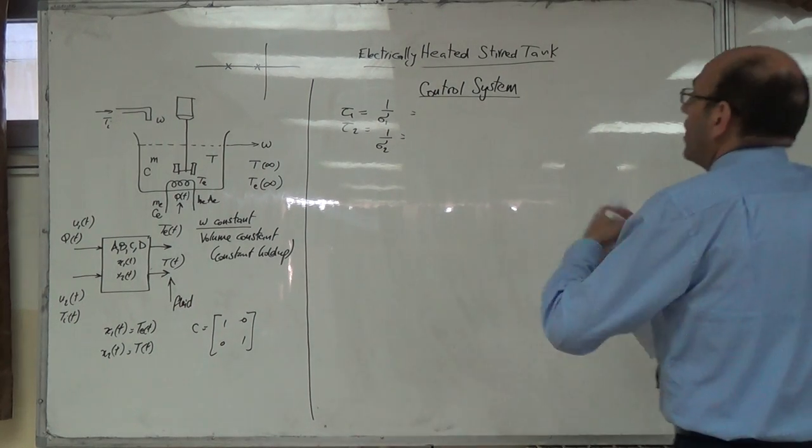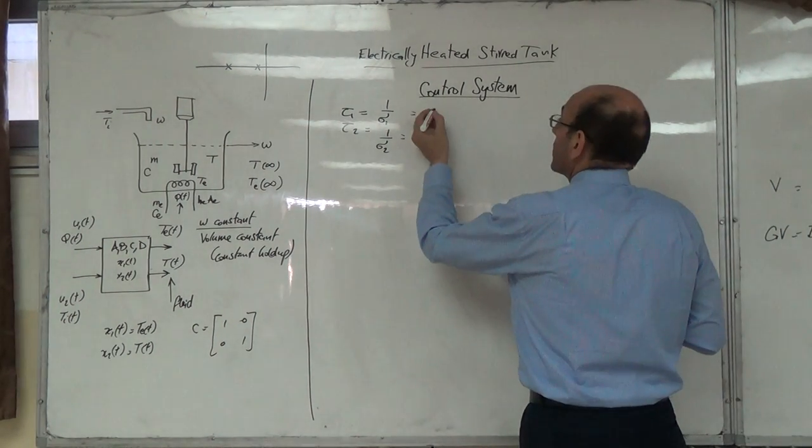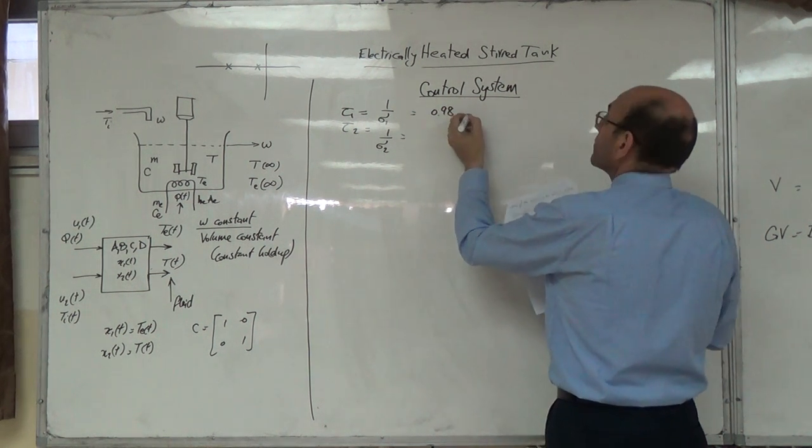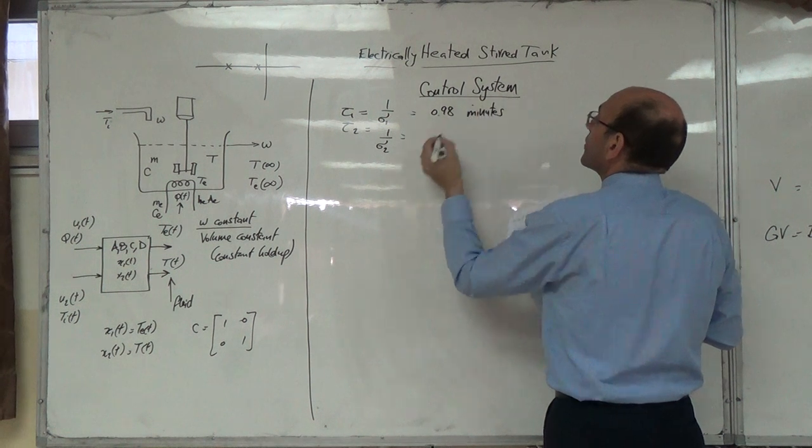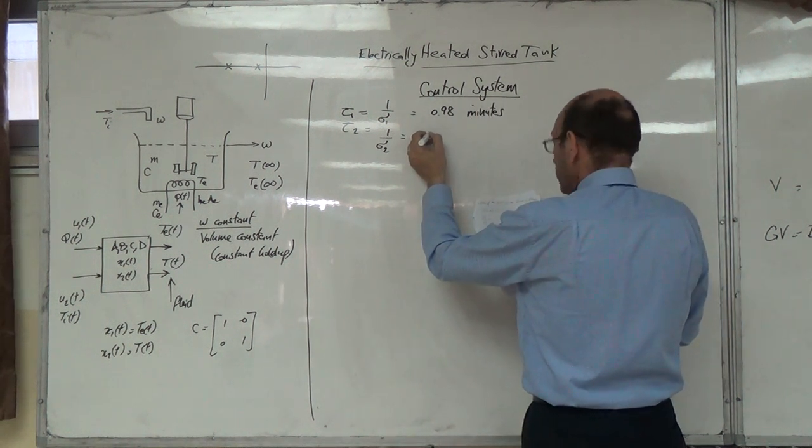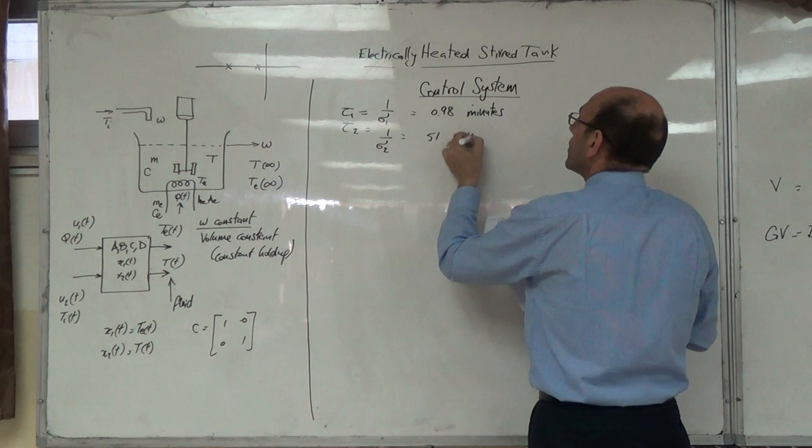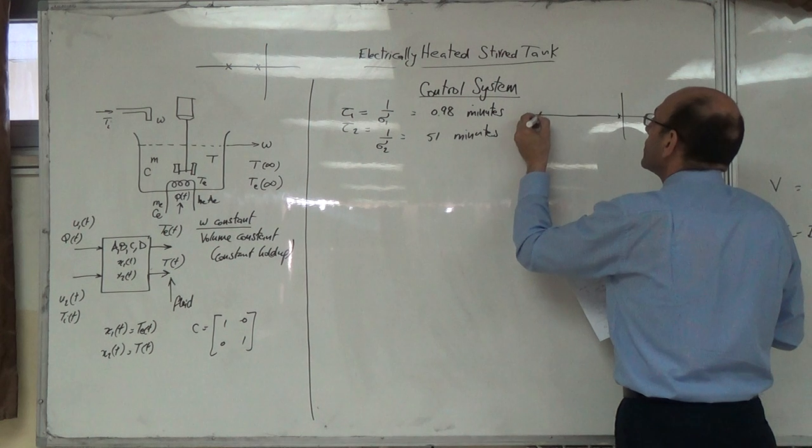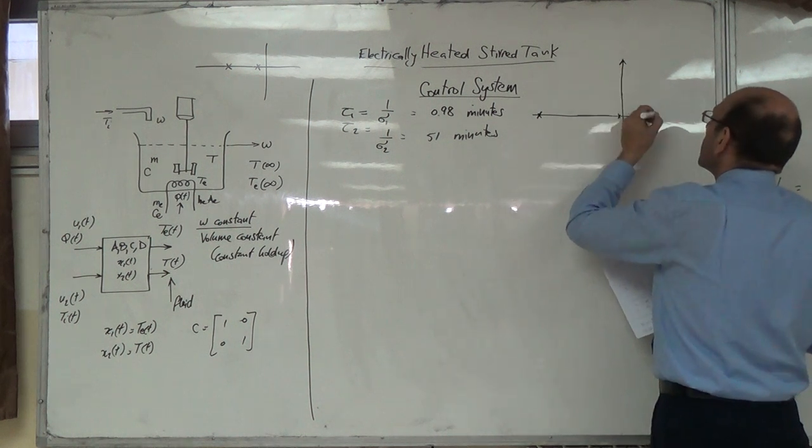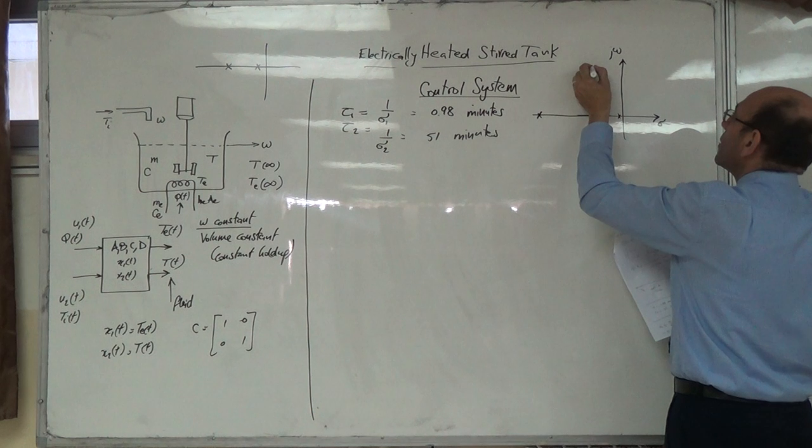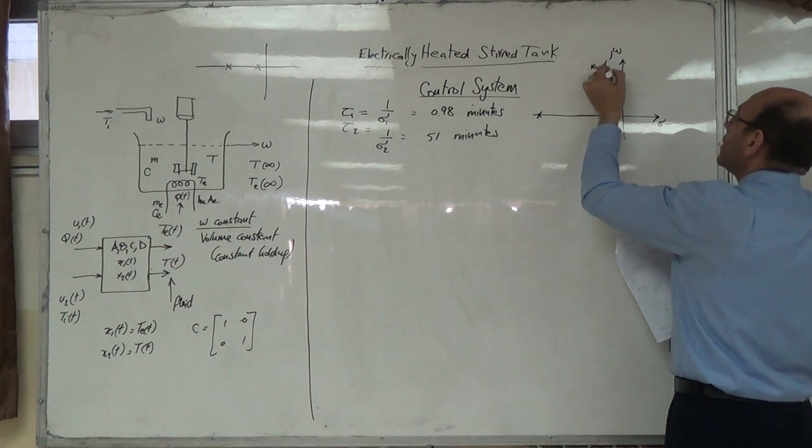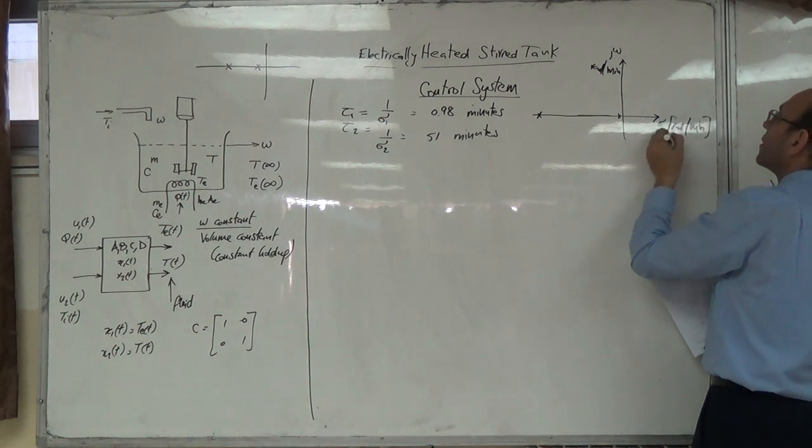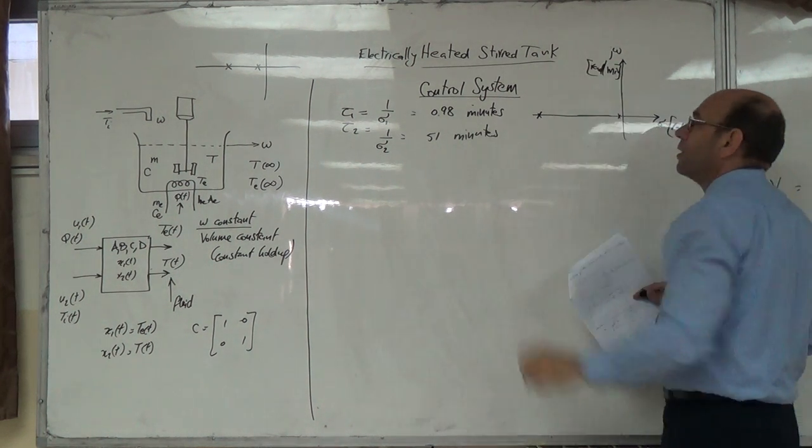If you look at this one, we will have one on this one. This one is Tau 1.98. 51 minutes. That's per minute. I am the system.